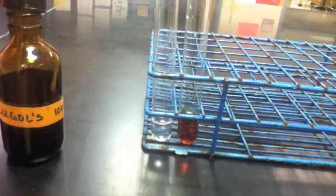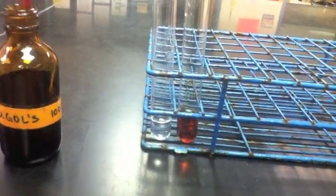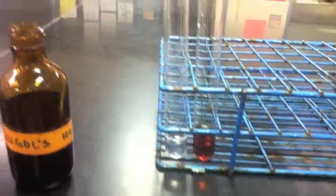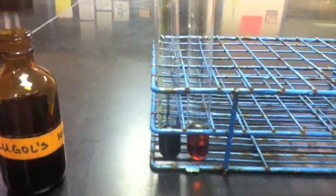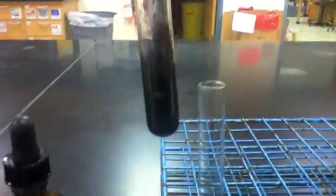I'll now add iodine to the positive control tube, which contains starch. Notice that immediately there's a color change to the bluish-black previously described. As I agitate the tube, you can see the precipitate forming on the walls.